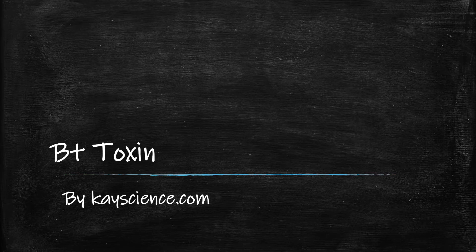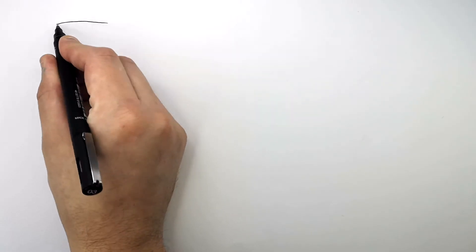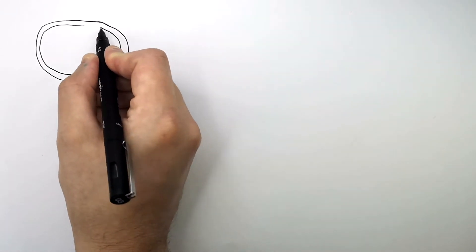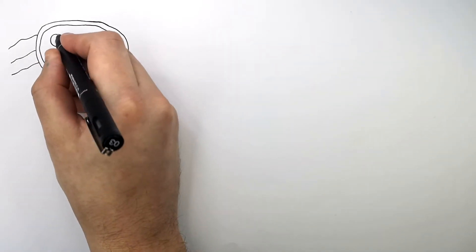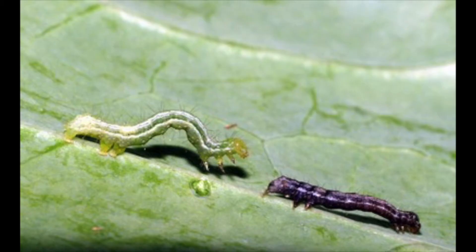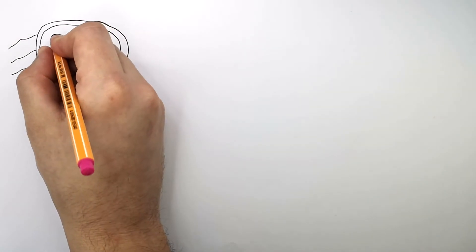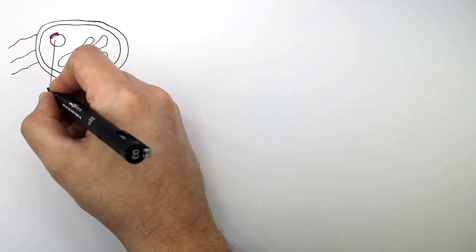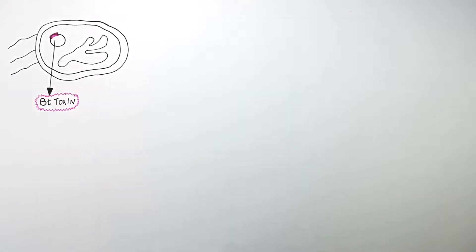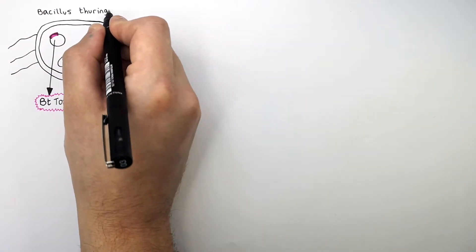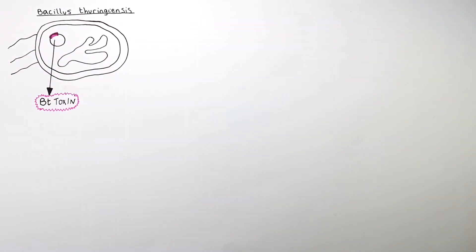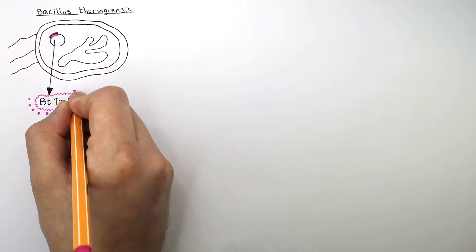Genetic Engineering in the Bt Toxin by KScience.com. This here is a bacterium called Bacillus thuringiensis. This is the plasmid DNA and this is the chromosomal DNA. The bacterium Bacillus thuringiensis was discovered to produce a toxin that killed the larvae of insects and it didn't affect humans or other organisms. So the Bt Toxin gene was discovered in the bacteria — Bt stands for Bacillus thuringiensis. And this here is the Bt Toxin, the pink dots.